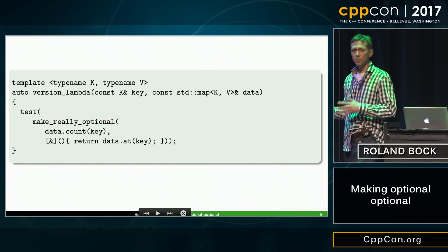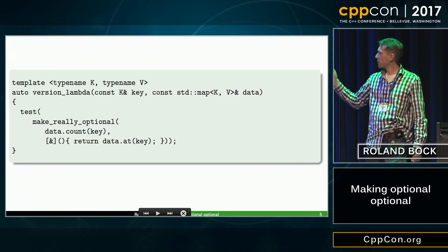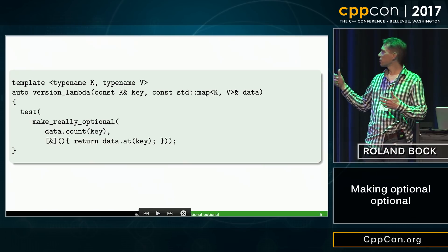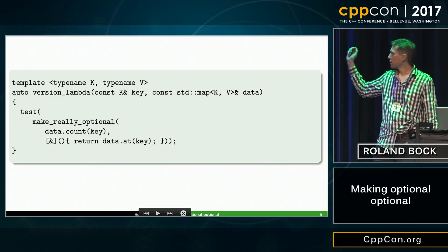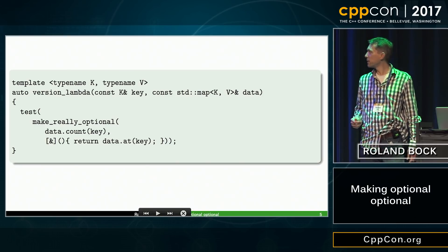And when we call this, it looks better than before. So make really optional, then the condition, then some lambda function that, because we don't want to repeat ourselves, captures everything by reference, and then this will extract the data if necessary.